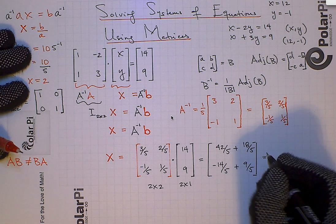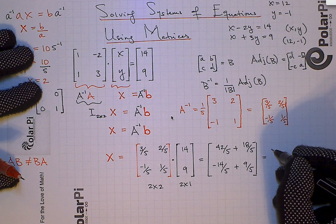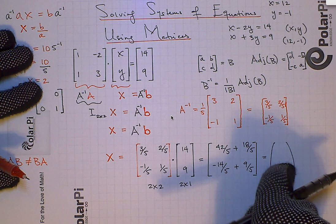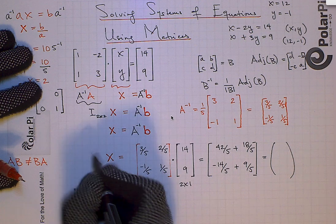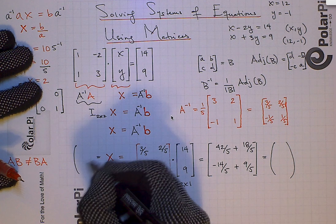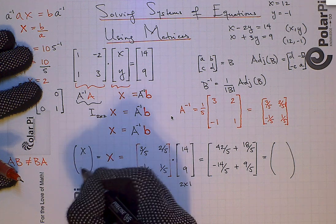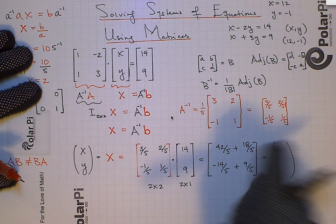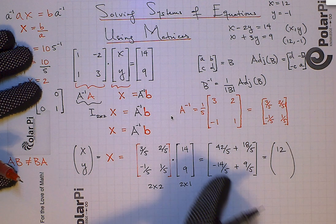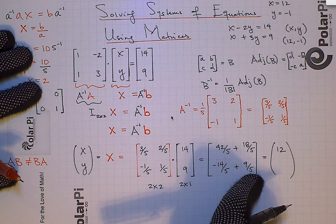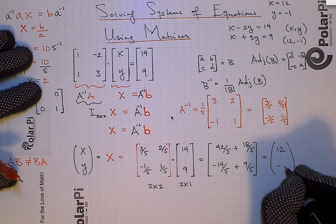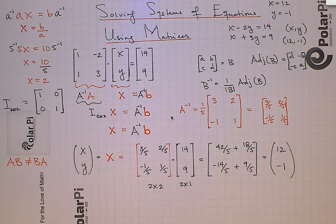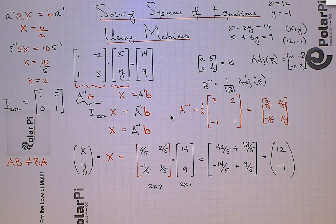So our final answer — this matrix here is x and y, because this bold x was a column matrix of x and y. So x and y: 42 fifths plus 18 fifths is 60 fifths, which is 12. And negative 14 fifths plus nine fifths is negative five fifths, which is negative one. As desired: 12 and negative one. Like I said, what I did here you could mimic for a three by three or four by four and so on. This is a pretty powerful tool. Take care.